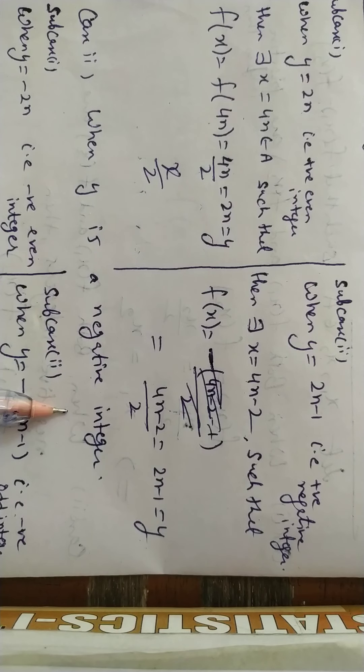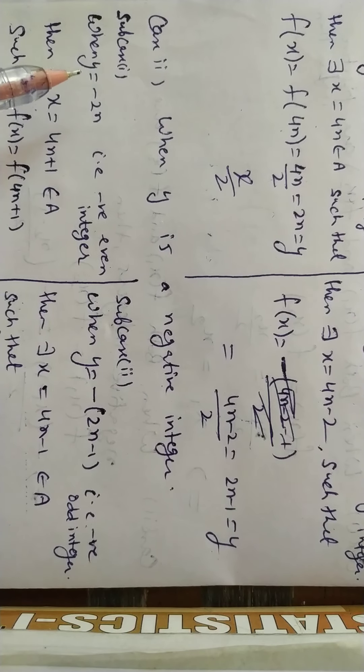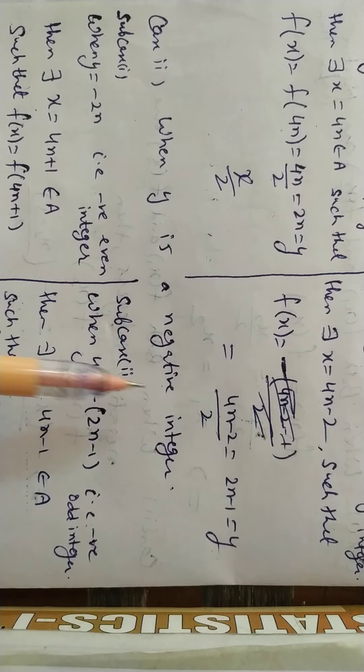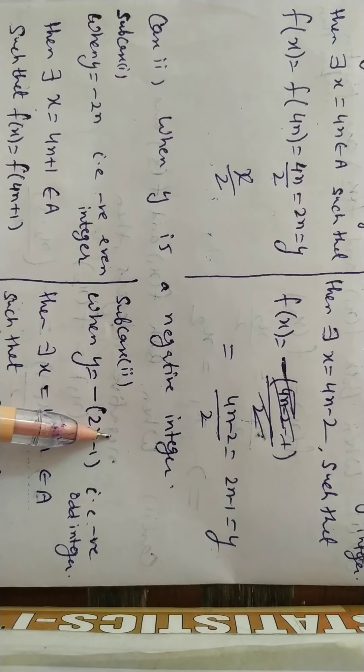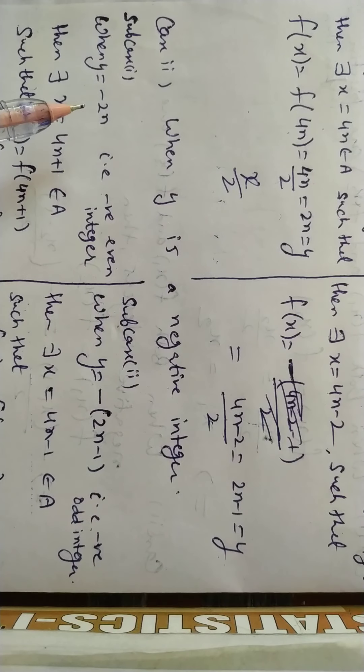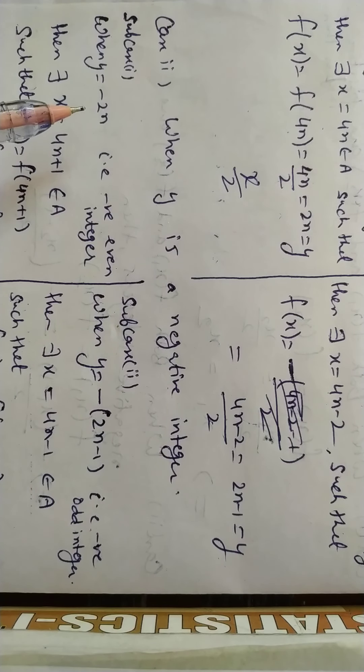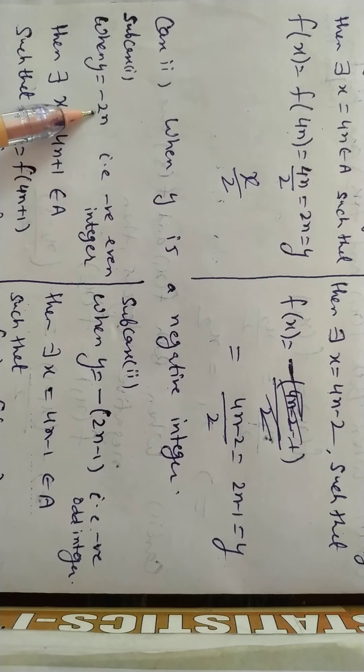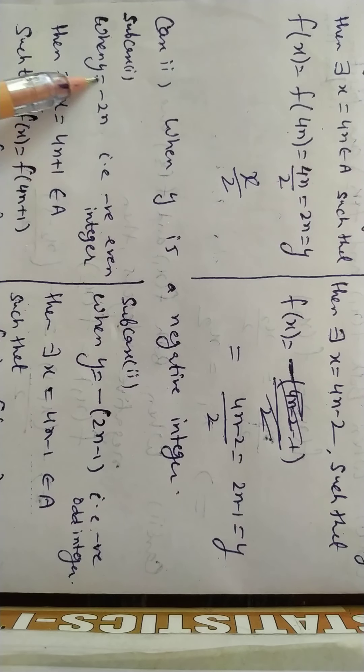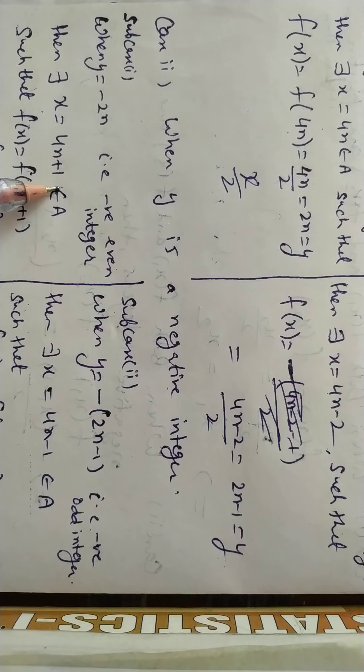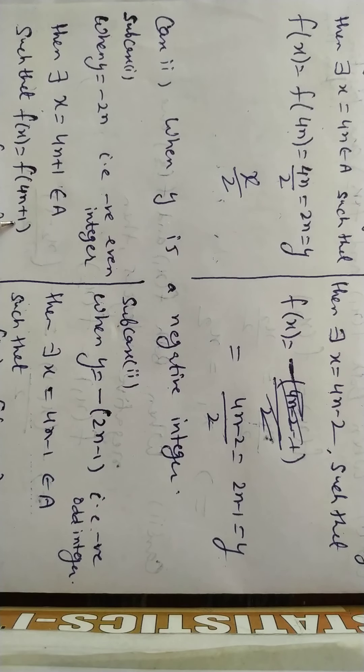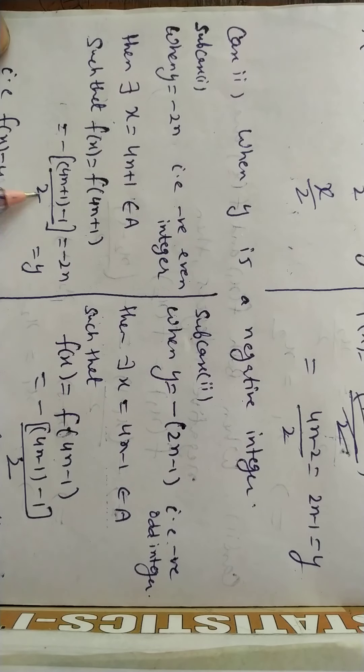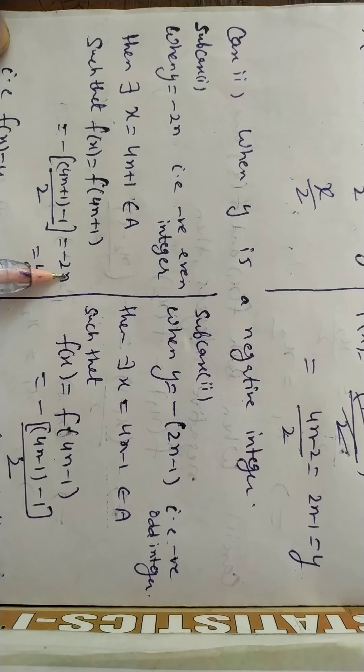If my y is a negative integer, then you have to take either -2n or another form, because it's a negative integer which can be even or odd. When we took the odd one, it was -(x-1)/2. We have to generate it like an odd number. So for -2n, take its corresponding: double it and add 1 to get an odd number. So f(x) = f(4n+1), putting it in -(x-1)/2. Minus cancels with minus, giving -2n, which is my y. So f(x) = y.